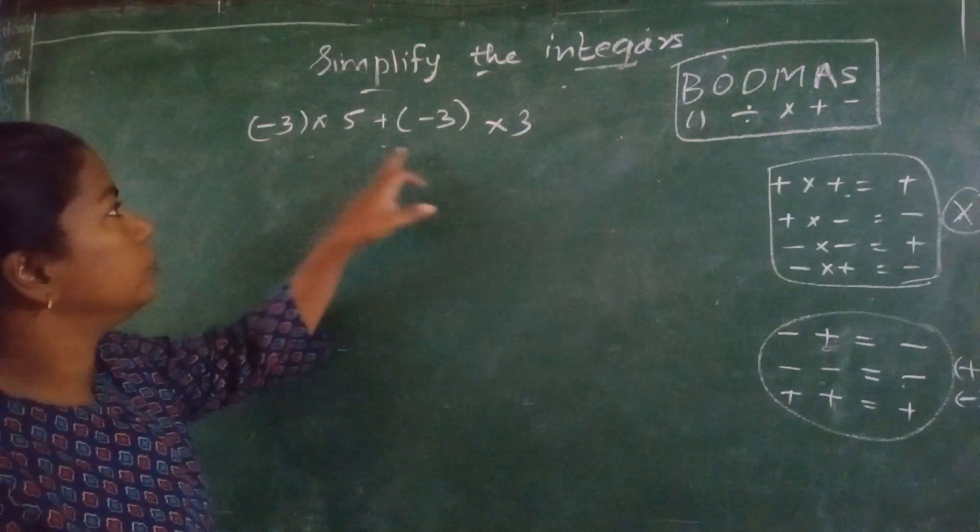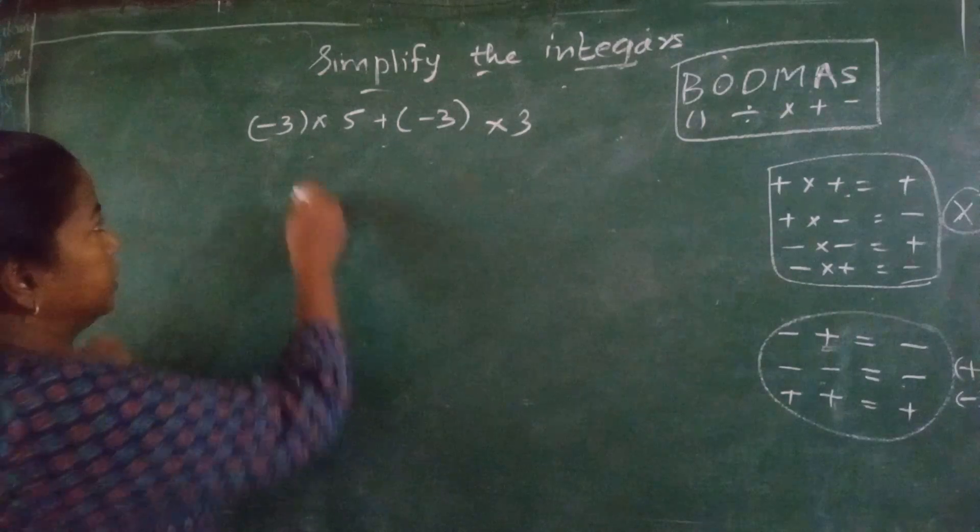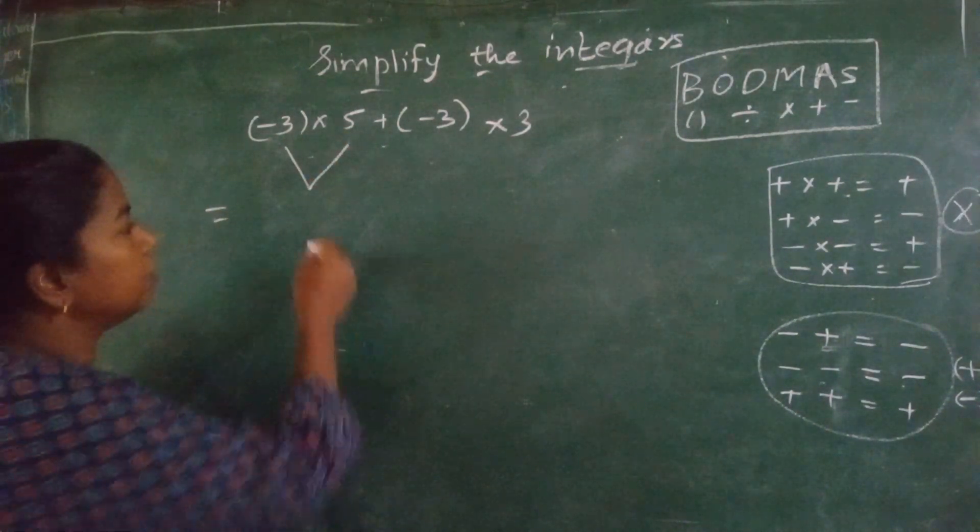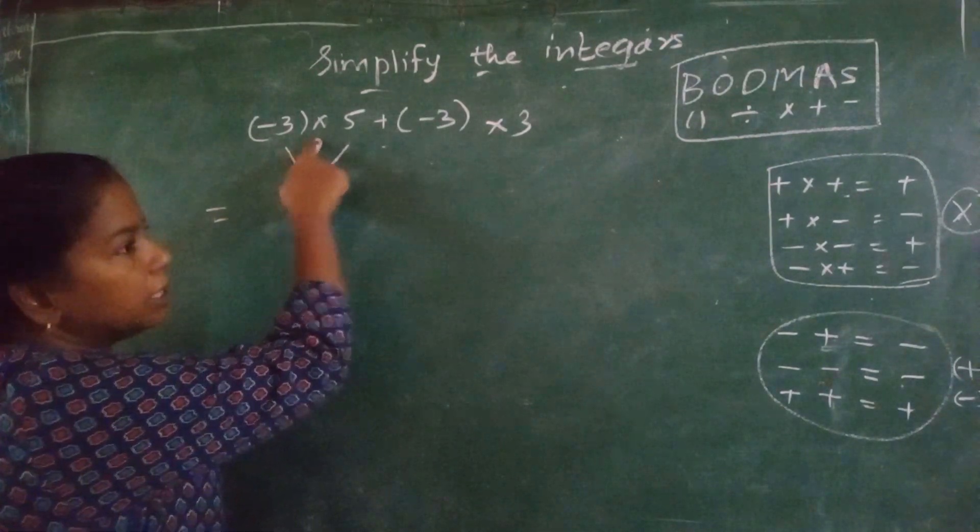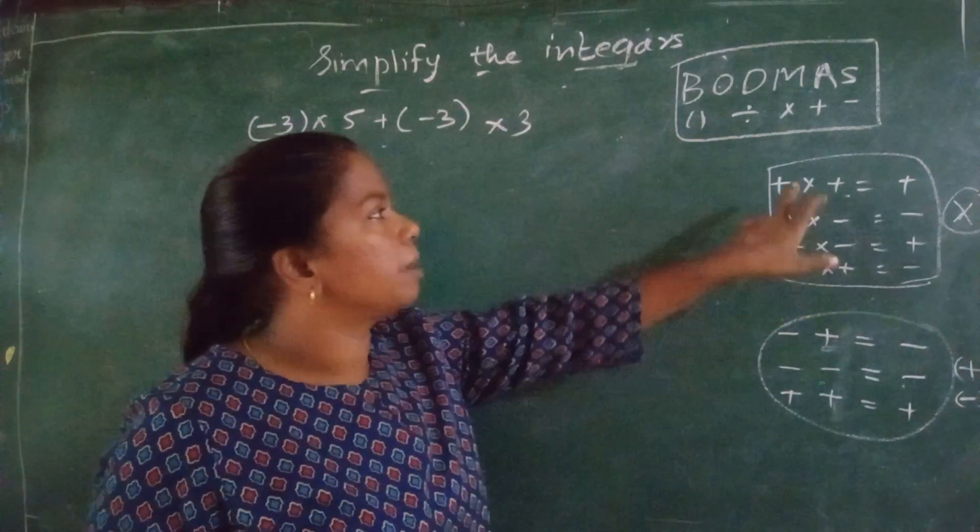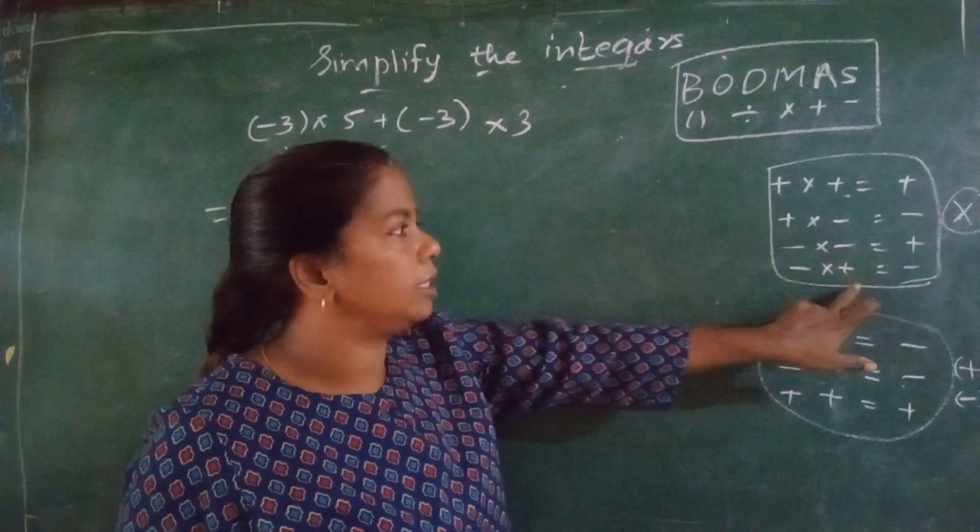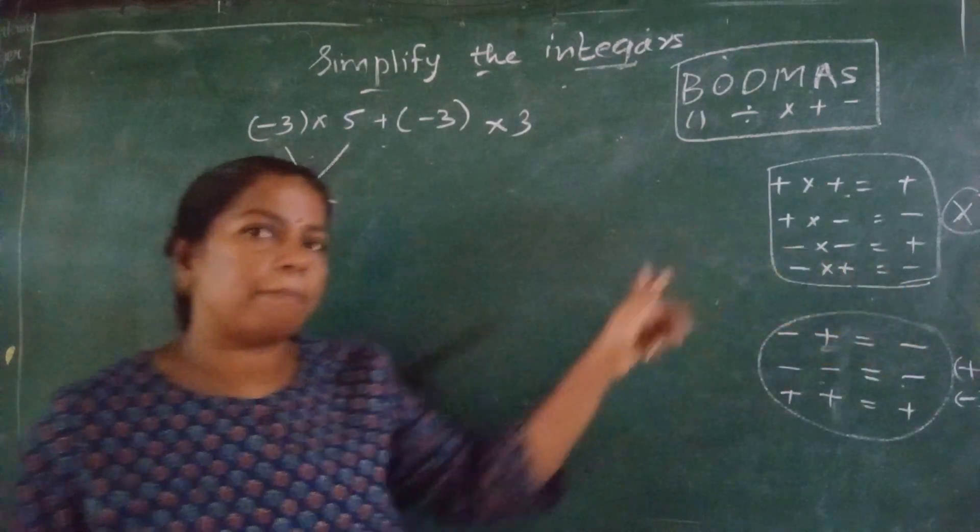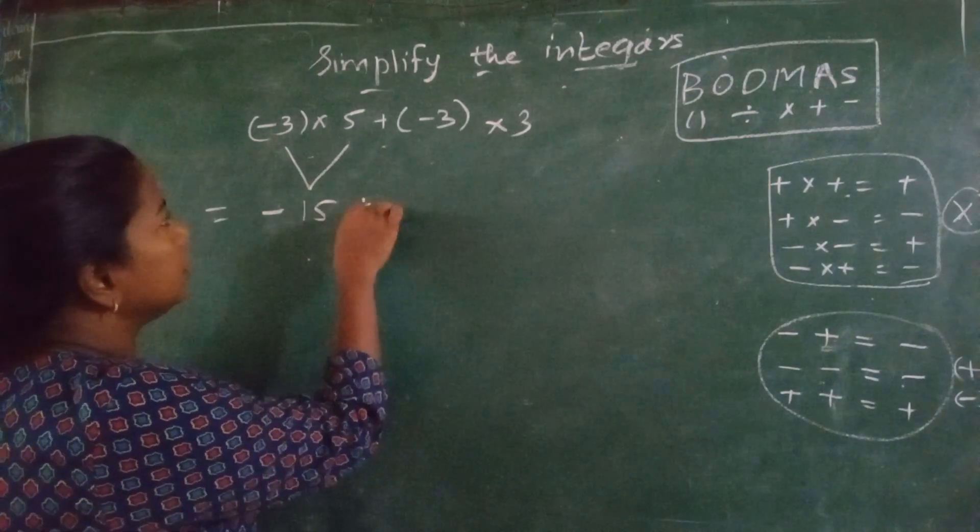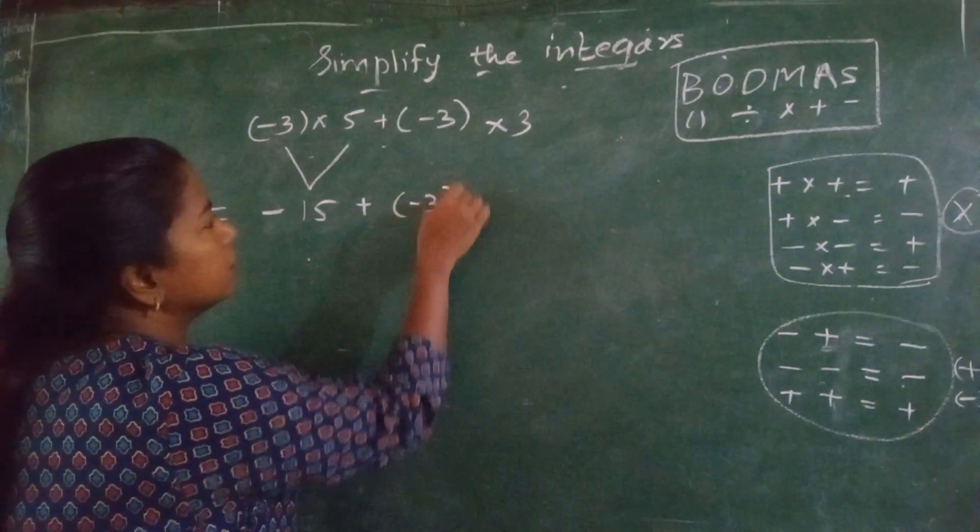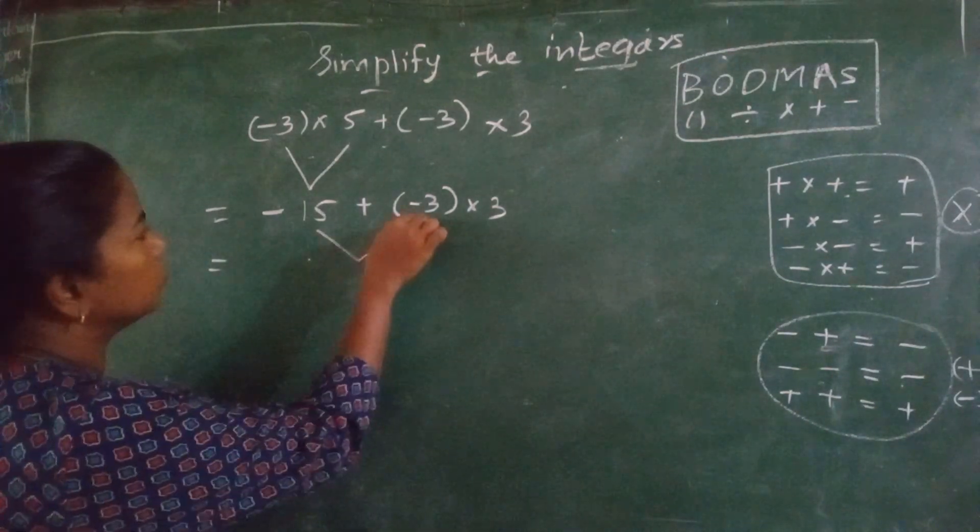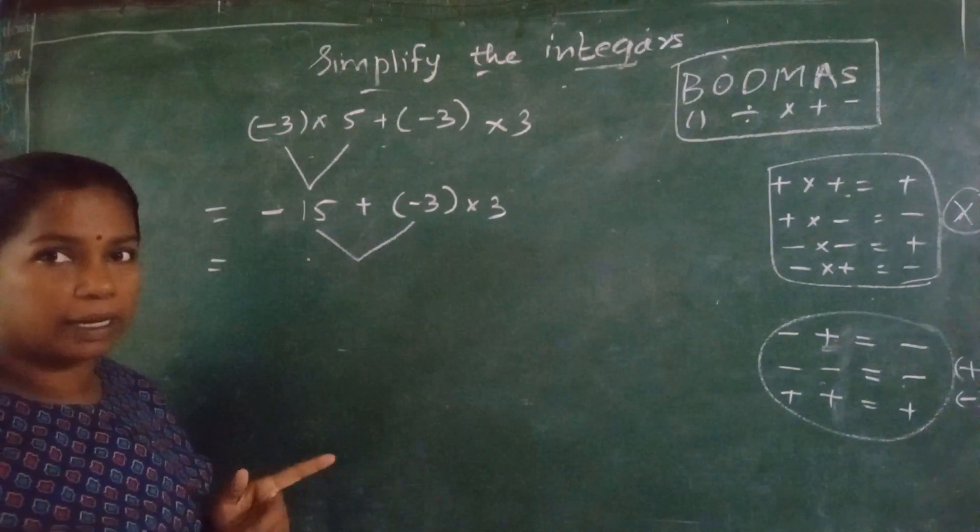Now, what we have to do. First, I will take this rule. Minus 3 into 5. 5 threes are 15. Now, this is multiplication. So, multiplication rule is here. Minus into plus, which sign I will put? Minus into plus, minus. Then, it is minus 15. Got it? Now, next, remaining digits, you will write as it is.